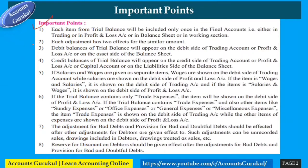The second important point: each adjustment has two effects for the same amount. This was also covered in our last video. Since we follow the double-entry accounting system, for each and every adjustment entry we have to do both a debit and a credit.